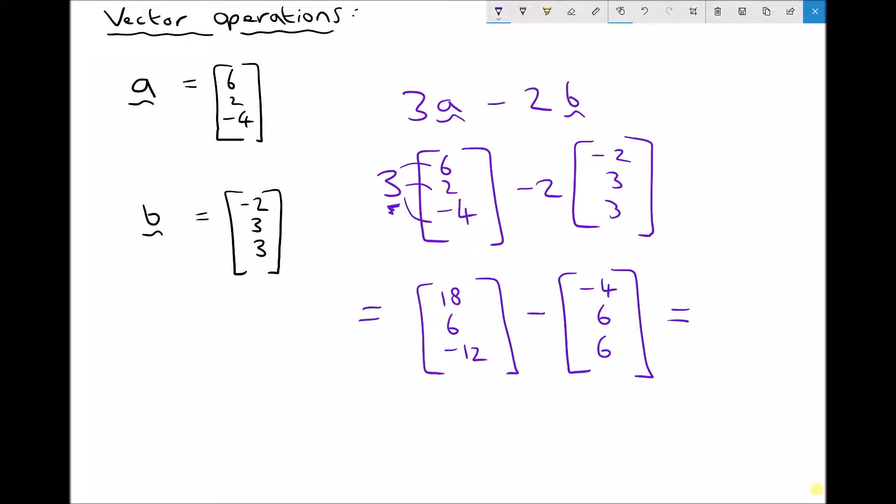And now I can just combine those in exactly the same way as I did previously. So I have 18 minus minus 4 or 18 plus 4 which is 22. I have 6 minus 6 which is just 0. And I have minus 12 minus 6 which is minus 18.